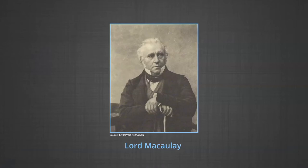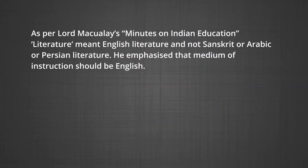In 1834, Lord Macaulay came to India as a law member of the Council of Government. As per Lord Macaulay's Minutes on Indian Education, literature meant English Literature, not Sanskrit, Arabic, or Persian. He emphasized that the medium of instruction should be English. Earlier, a survey was conducted by the British government to know the real position of education in India, conducted in three places — Madras, Bombay, and Bengal — and the conclusion was that each village had a primary school.